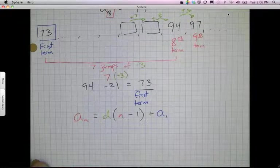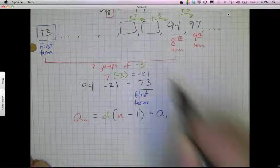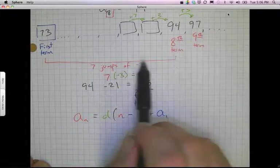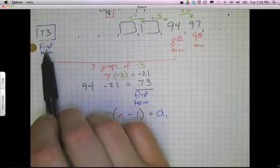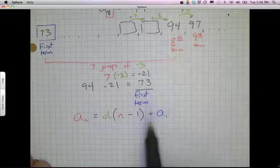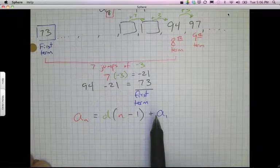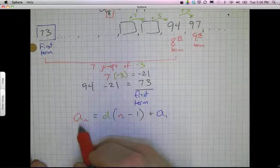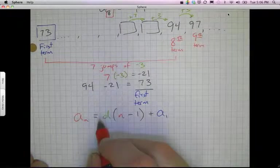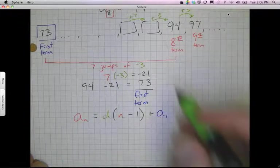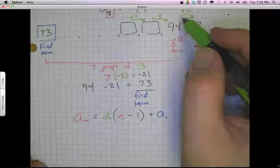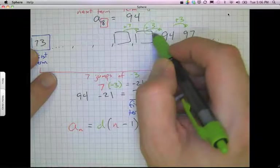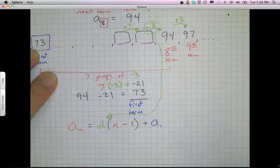So let me just kind of note that a little bit differently, that I had to go back 21 numbers from 94 to get to my 73. Now once I've got that whole thing, I can put all the different pieces into here. So a sub n just stays the way that it is. That's what we're solving for again. But d, my difference or my growth, comes from here. So this is the number that goes in there for my d.